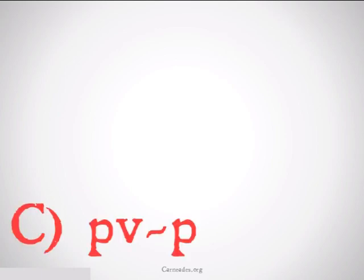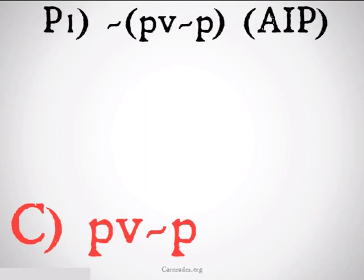You can also, just like with conditional proof, use indirect proof to prove logical truths and tautologies. Let's say we want to prove p or not p. Well first we're going to assume indirect proof the opposite of that.